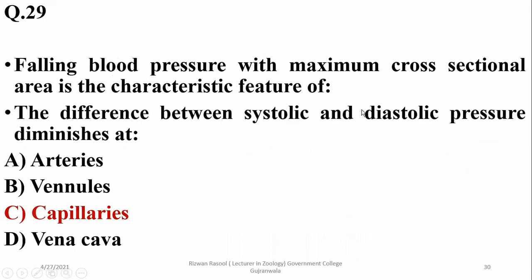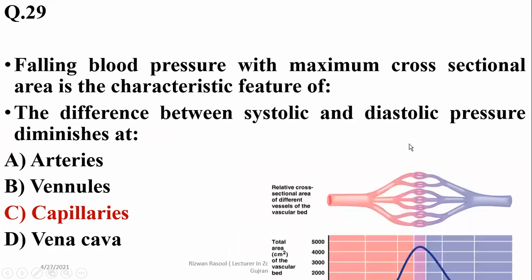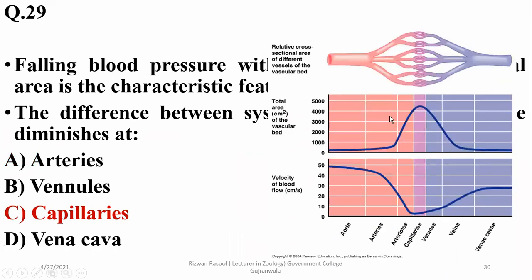Falling blood pressure with maximum cross-sectional area is the characteristic feature of blood capillaries. The difference between systolic and diastolic pressure diminishes at the capillaries, and the highest cross-sectional area is also observed there with falling blood pressure.